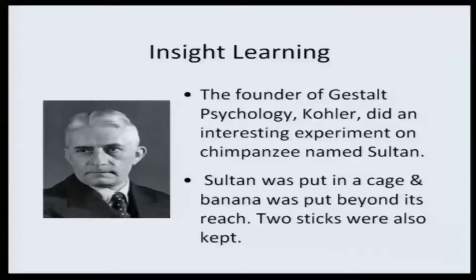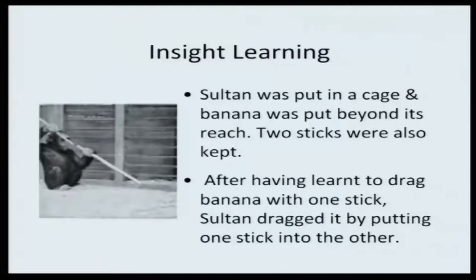This is what Kohler did — he wanted to see how the chimpanzee processes information and what type of response Sultan would come forward with. As you can see in the photograph, Sultan kept observing the bunch of bananas and the two sticks. Then he simply took the first stick, fixed it into the second one, and dragged the banana using the combined stick.